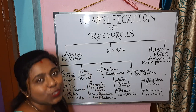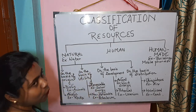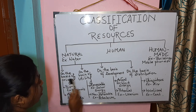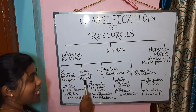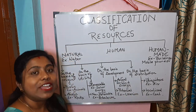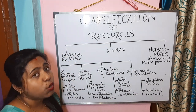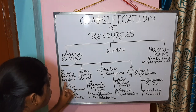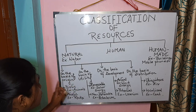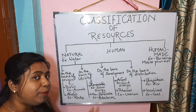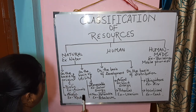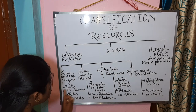Now let us go ahead with the further classification of natural resources. Natural resources are subdivided on the basis of origin, on the basis of utility, on the basis of development, and on the basis of distribution. Let us begin with the explanation of resources on the basis of origin.